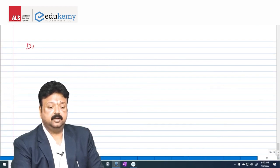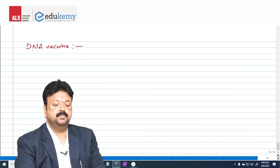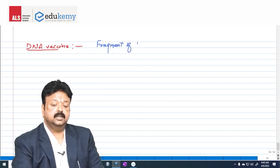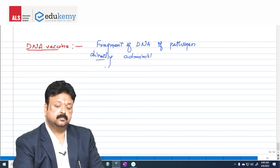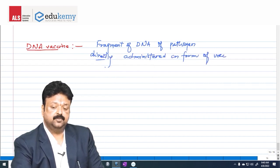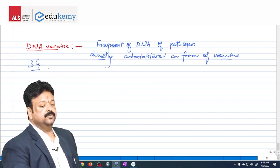And the third generation vaccine is called as DNA vaccine. This DNA vaccine is simple - the fragment of DNA of pathogen directly administered in form of vaccine. Fragment of DNA of pathogen directly administered in form of vaccine. They are called DNA vaccine or third generation vaccine.